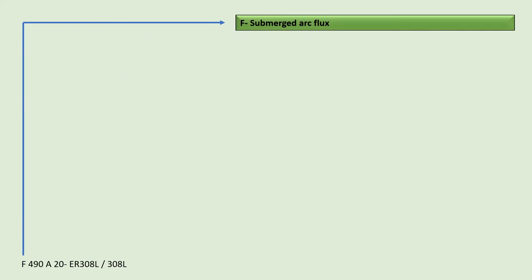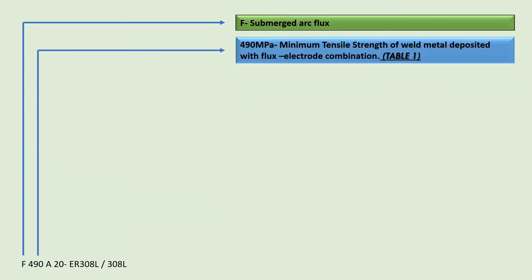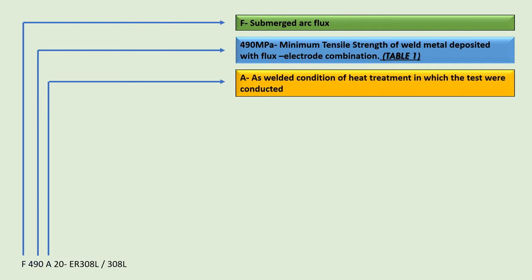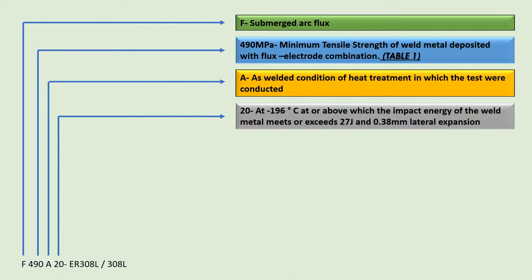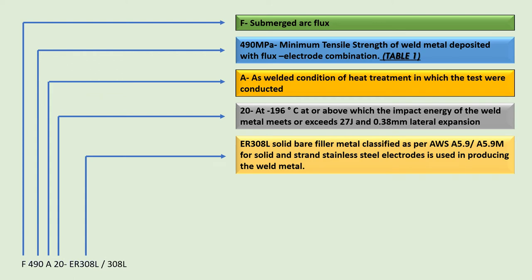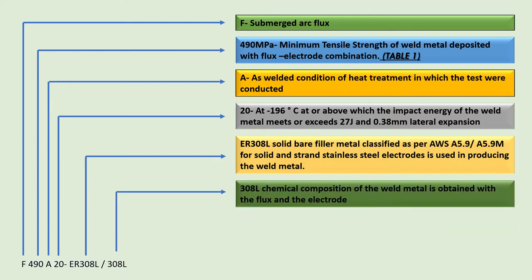Let us take an example of a flux-electrode designator. F indicates submerged arc flux. 490 indicates minimum tensile strength of 490 MPa, which has been fulfilled by the weld metal deposited with the flux-electrode combination. A indicates the as-welded condition of heat treatment in which the tests were conducted. 20 indicates minus 196 degrees Celsius at or above which the impact energy of the weld metal meets or exceeds 27 joules and 0.38 mm lateral expansion. E308L shows the solid bare filler metal classification per SFA 5.9 for solid stainless steel electrodes used in producing weld metal.